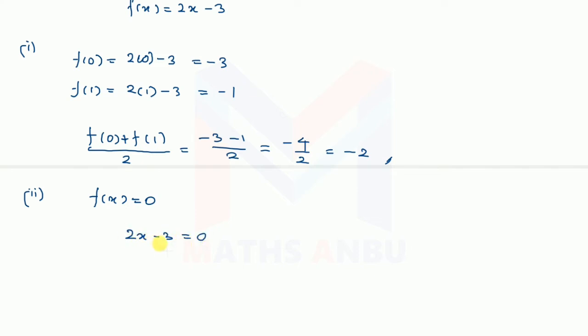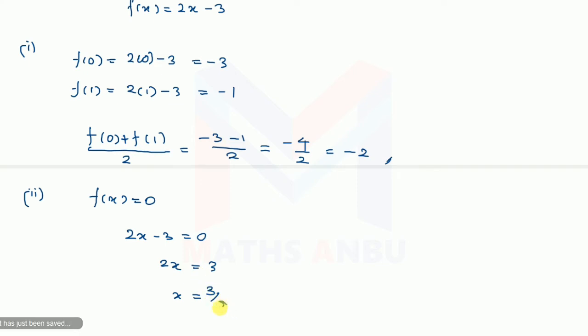So 2x minus 3 equals 0, and minus 3 moves to the other side as plus 3, so 2x is equal to 3. Therefore x value is 3 by 2.